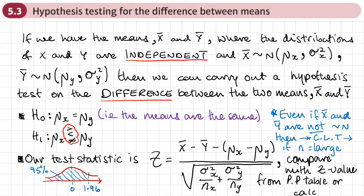One last point: even if the sample means of X and Y are not normally distributed, as long as N is large, by the Central Limit Theorem we can still carry out this hypothesis test on the difference between the two means.